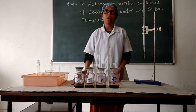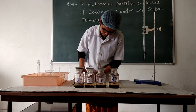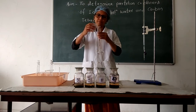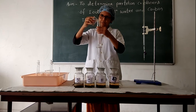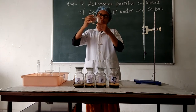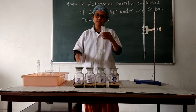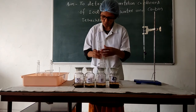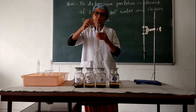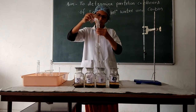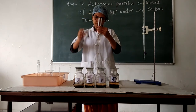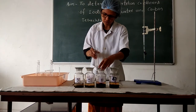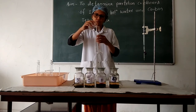Now I am adding carbon tetrachloride in each bottle. The quantity for bottle A is 10 ml, for bottle B is 20 ml, for bottle C is 30 ml, and for bottle D is 40 ml.